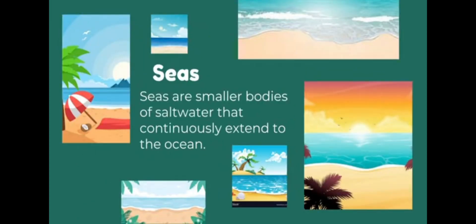The next is seas. Seas are smaller bodies of salt water that continuously exchange with the ocean. The water of a sea is also salty, and it is not fit for drinking.